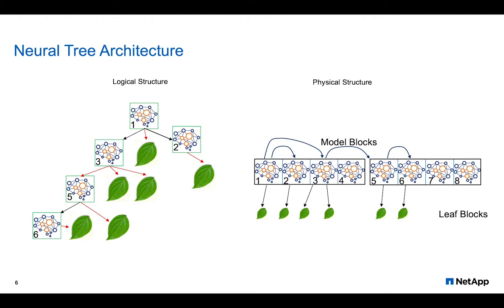These are what neural trees look like — on the left the logical structure and on the right the physical structure; it is the same tree. Looking at the logical structure it is just a tree: we start in the root model and the model tells us which node to go to next. Instead of performing binary comparison we simply compute and get a value from the neural network. The black arrows mean the next transition is in the same physical block; the red arrow means a disk I/O is required. Because our neural networks are so small, multiple models are packed into a single physical block. We have two kinds of blocks: leaf blocks, which are basically B+ tree blocks, and model blocks, which are arrays of floating point numbers.